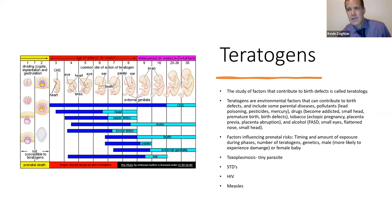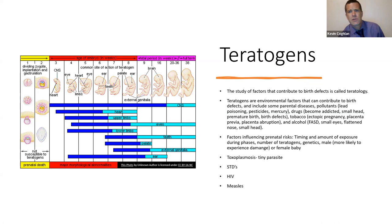For teratogens — these are environmental factors that can cause harm to the baby. The study of factors that contribute to birth defects is called teratology. Teratogens are environmental factors that contribute to birth defects, and they include parental diseases, pollutants like lead poisoning, pesticides, mercury, and drugs. Babies can become addicted, can end up with small heads, premature birth, and birth defects. Tobacco causes ectopic pregnancy, placenta previa, and placental abruption. Alcohol causes fetal alcohol syndromes, with effects including small eyes, flat nose, and small head.